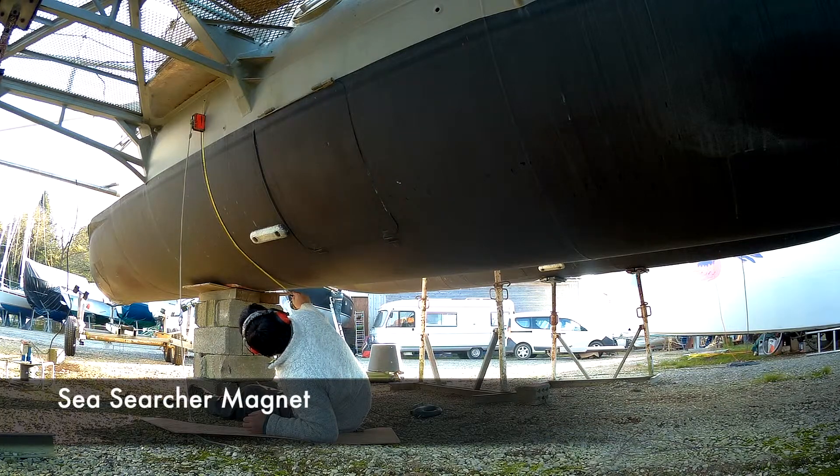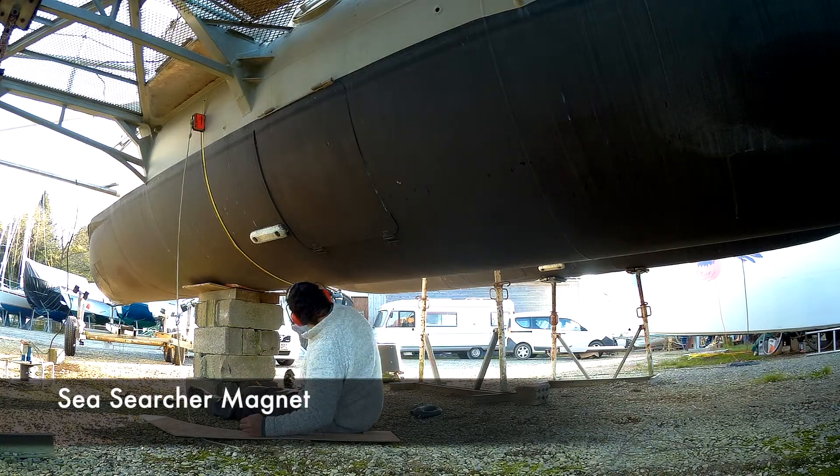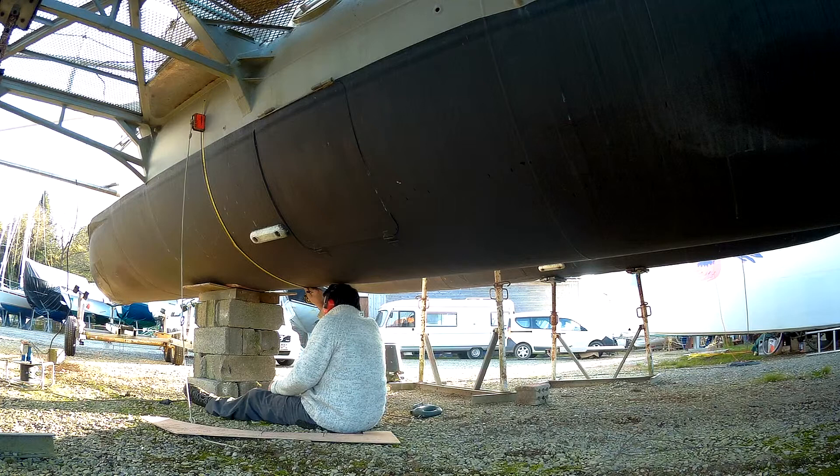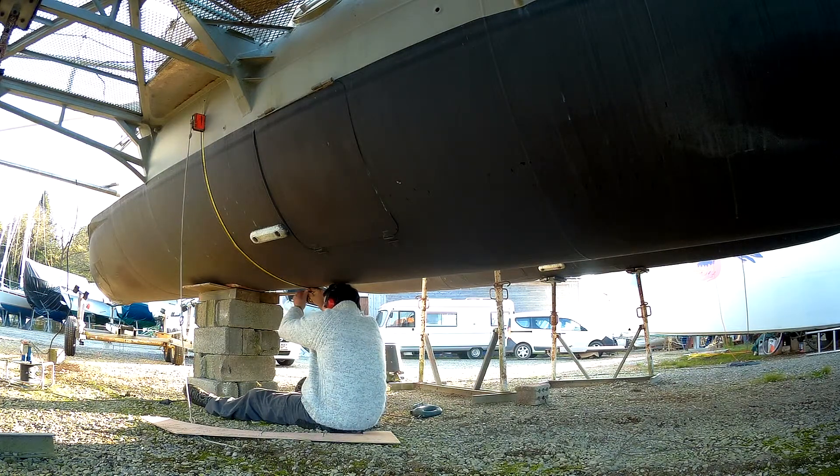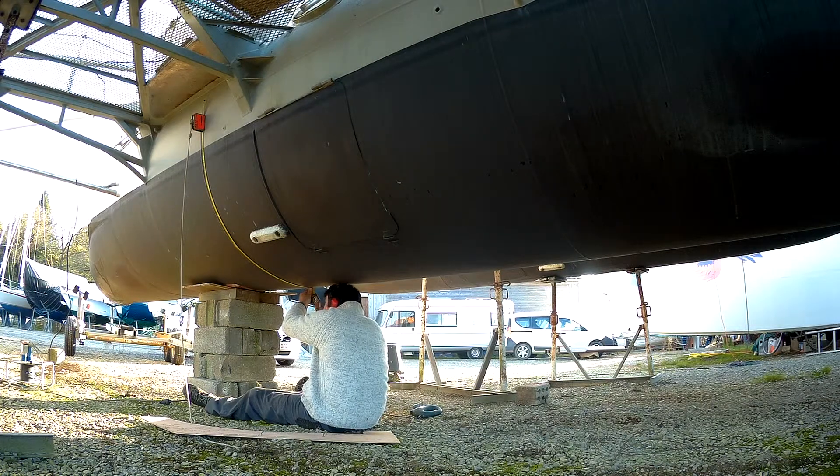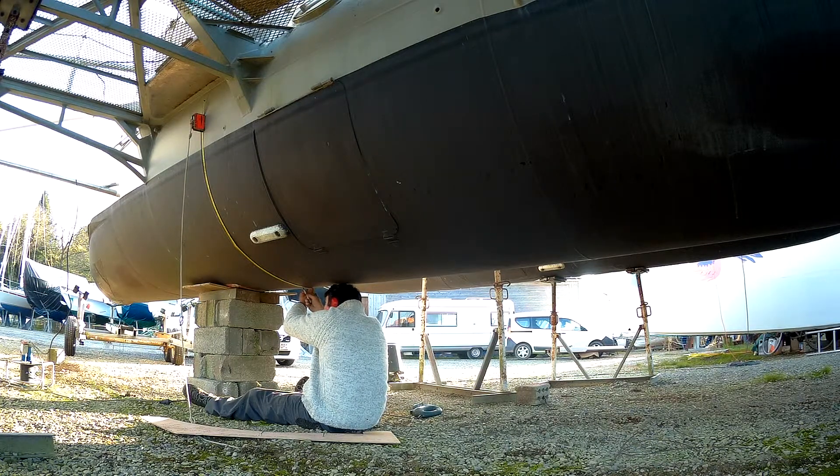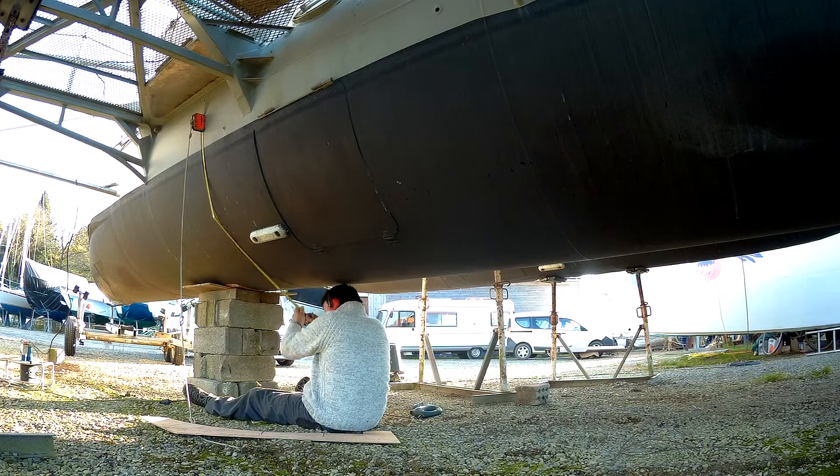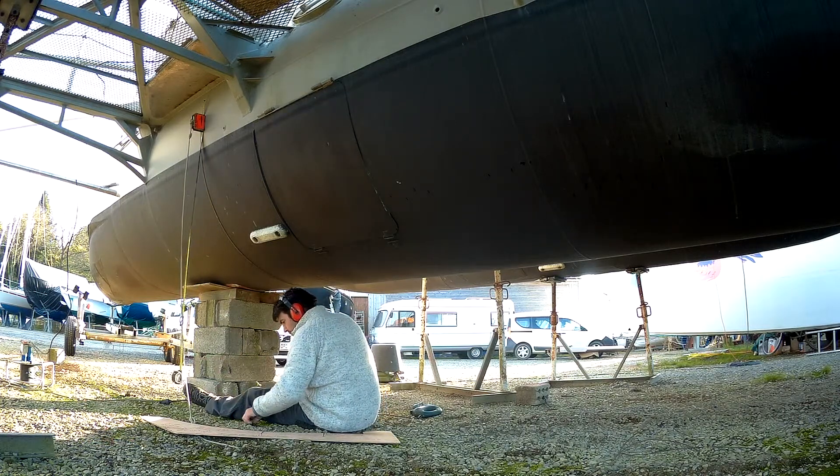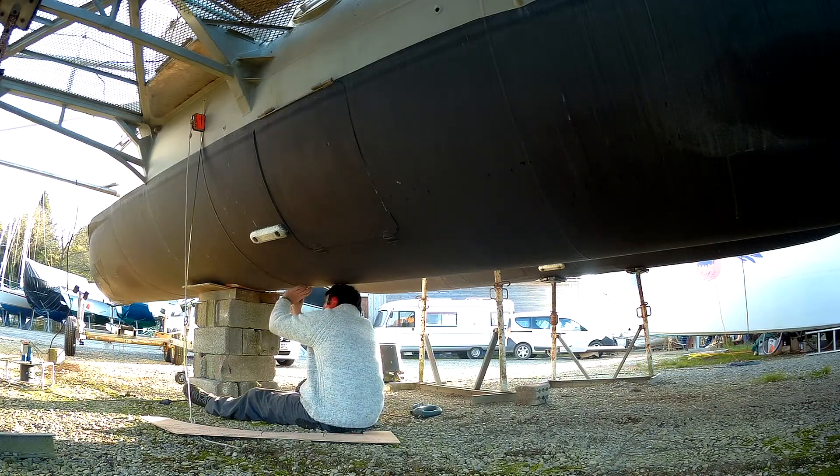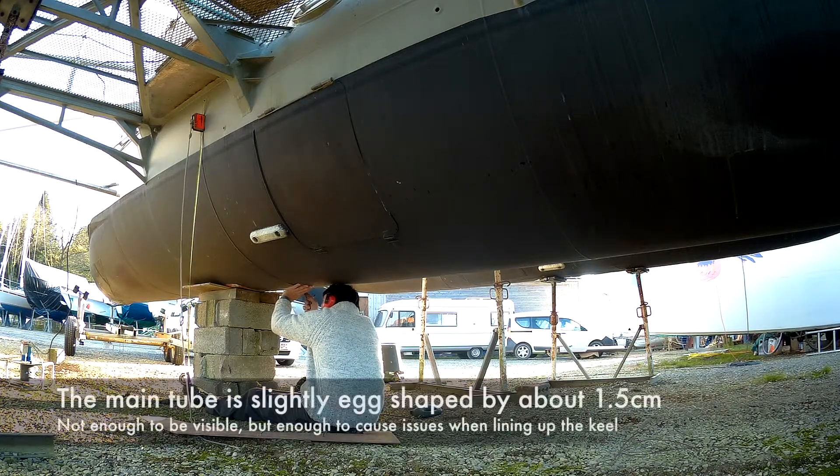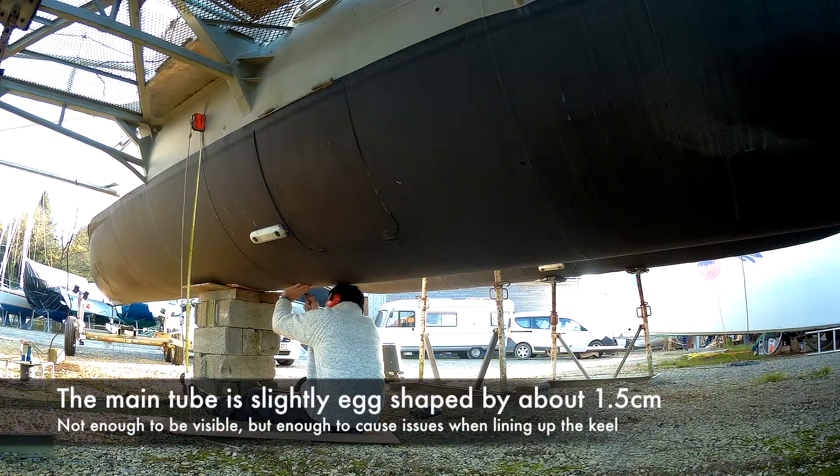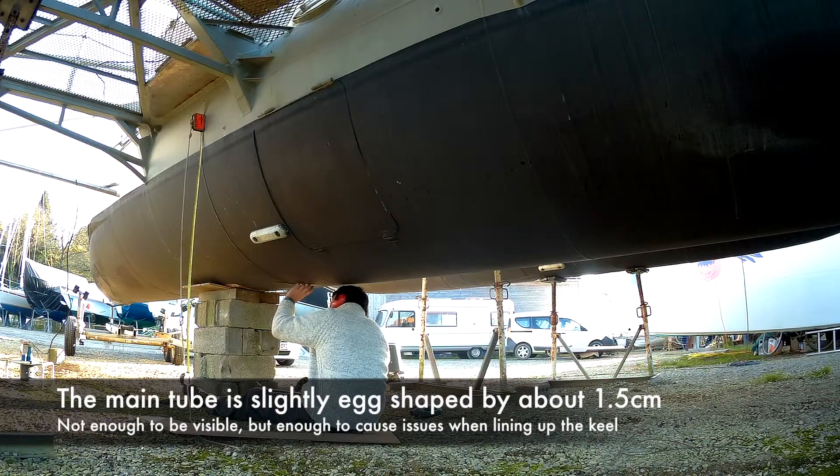There's a sea searcher magnet to hold the tape measure in place. Sea searcher magnets are for picking up bits that you've dropped in the water. I have to say, the only thing I've ever recovered with a sea searcher magnet was itself when the rope came off and I used a bit of steel. The reason why these dimensions are so important is because there's about a 1.5 cm difference in the shape of the tube from the front to the rear, so it's slightly egg-shaped.